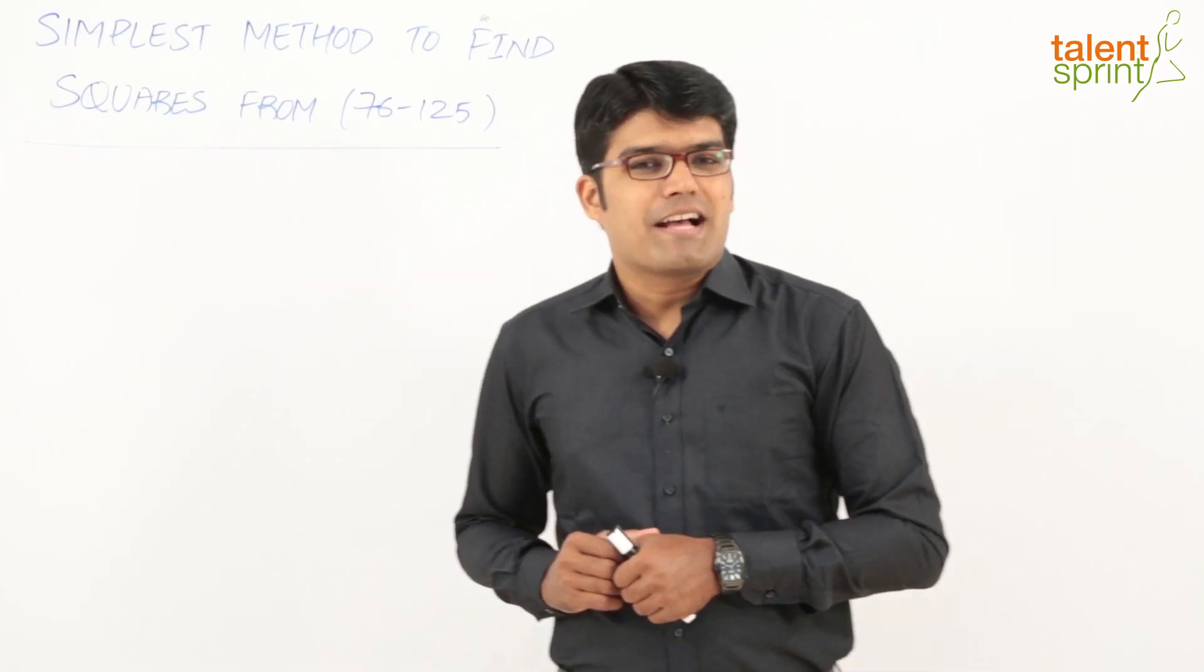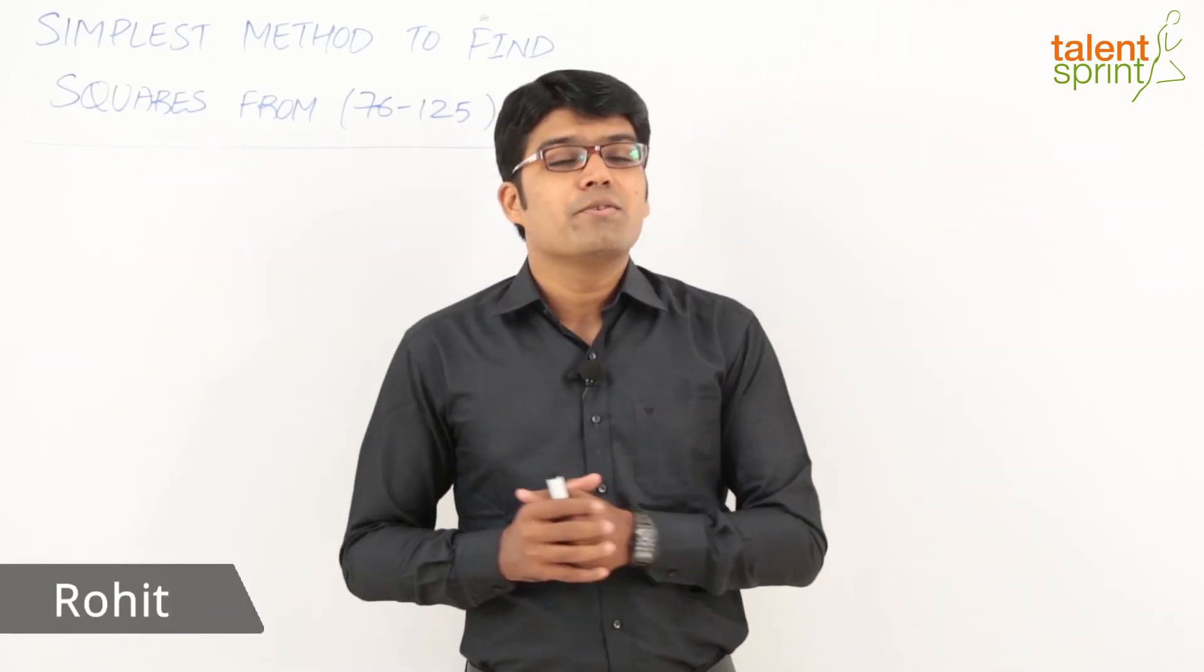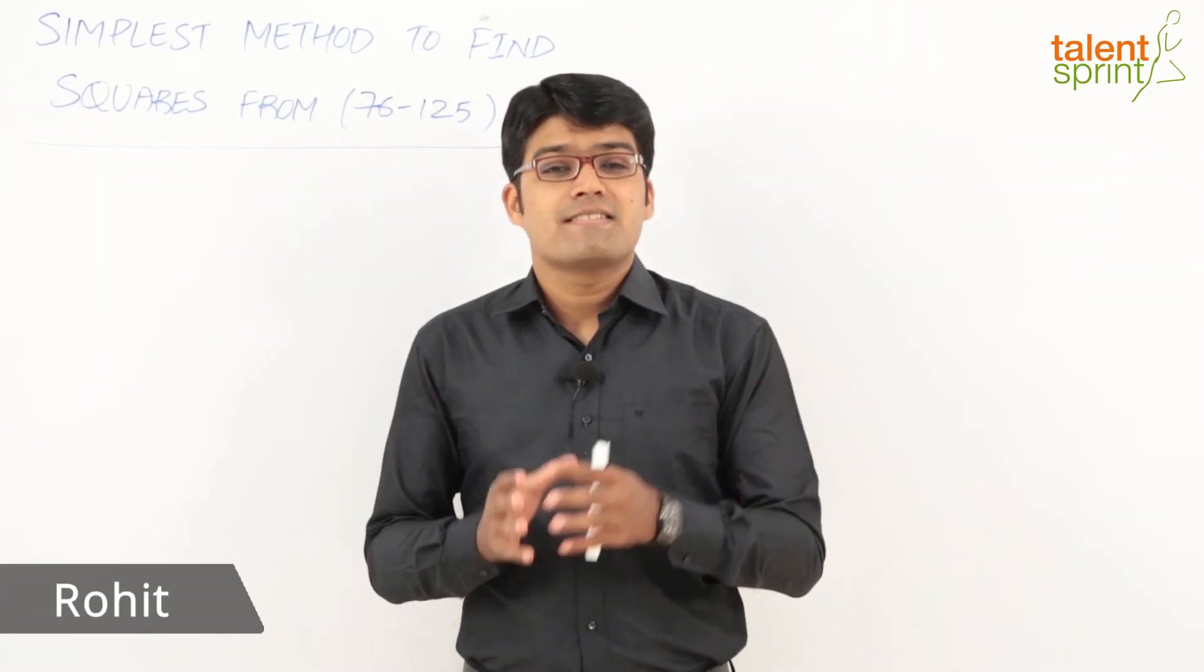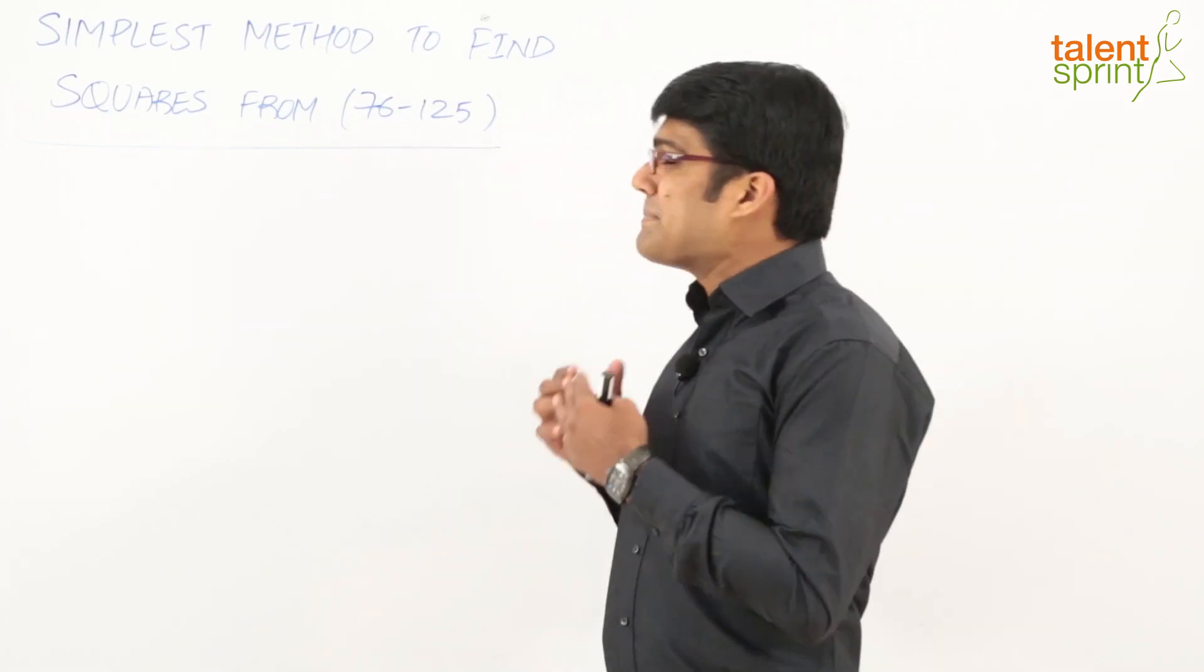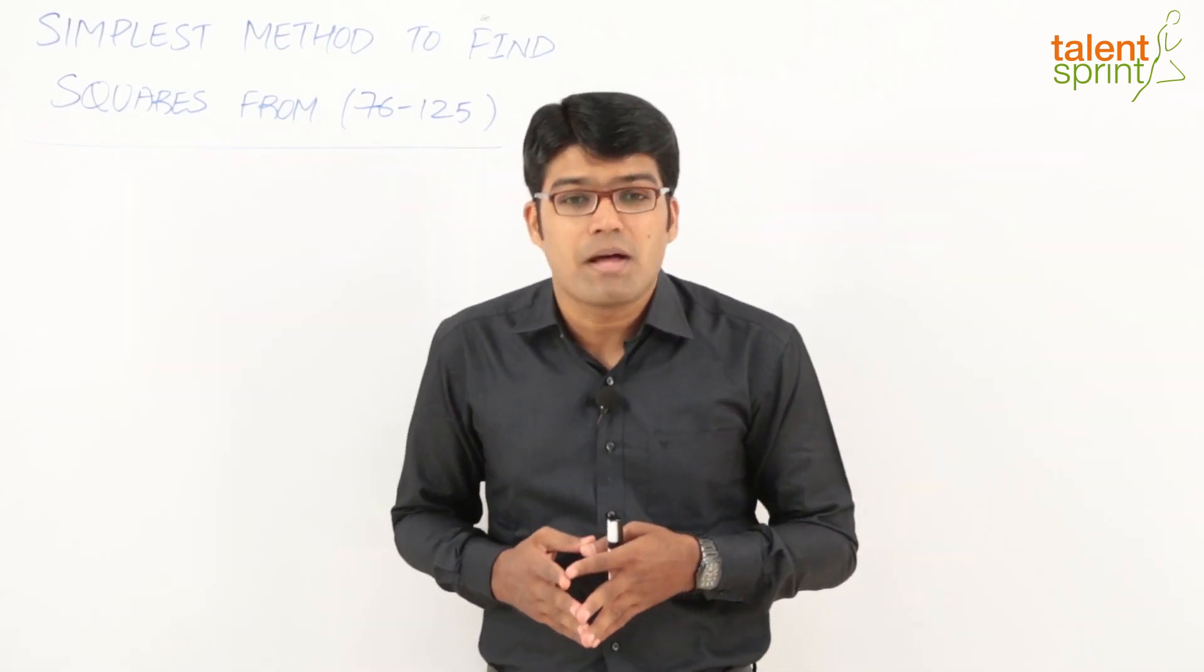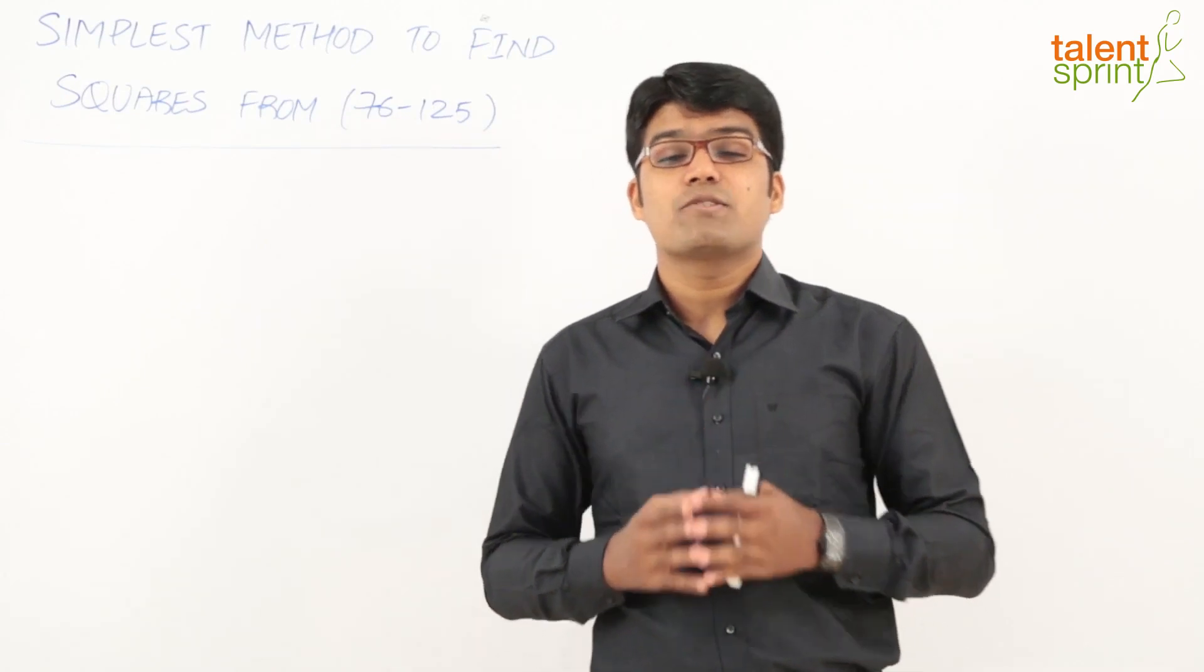Hey guys, welcome to Talent Sprint. I'm Rohit Agarwal, and here's your daily dose of aptitude skills. In this session today, we're going to look at the simplest method to get the squares of numbers from 76 to 125.